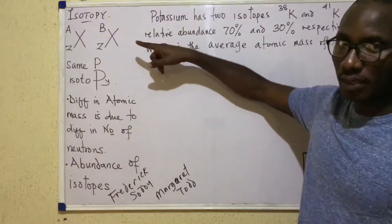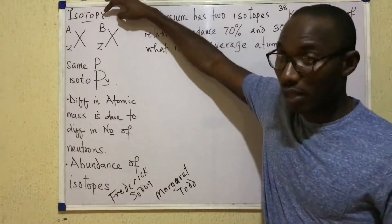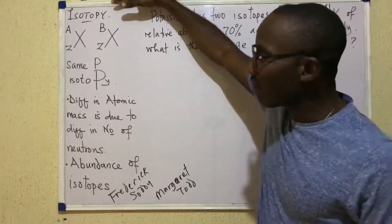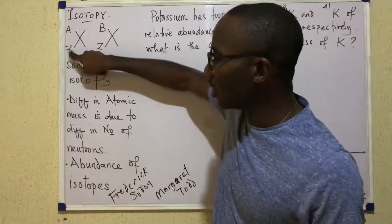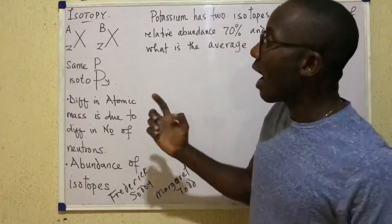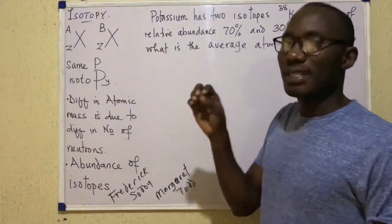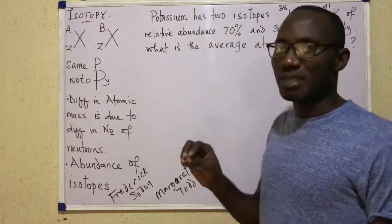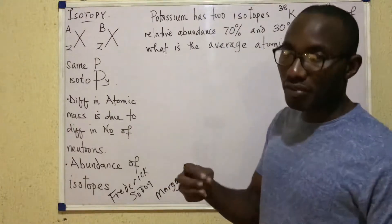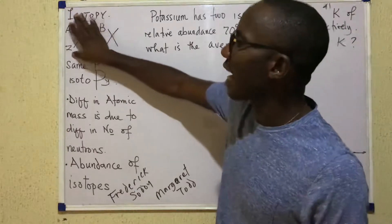Now, what is isotopy? Isotopy is said to be a phenomenon where two or more atoms have the same number, whether you say atomic number or just number, and then they have different masses. So two atoms that are of the same atomic number but different atomic masses are referred to as isotopes.